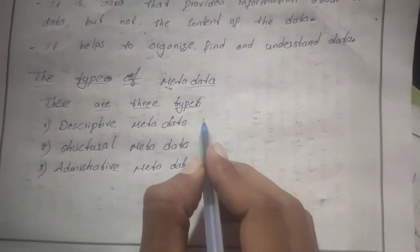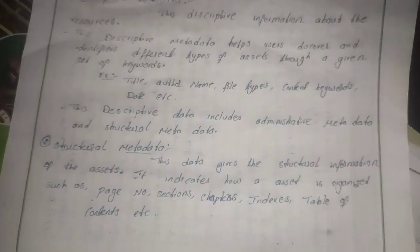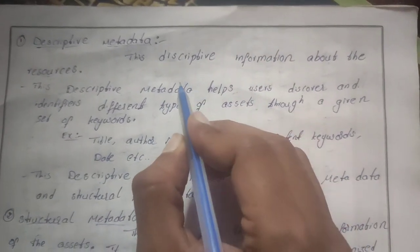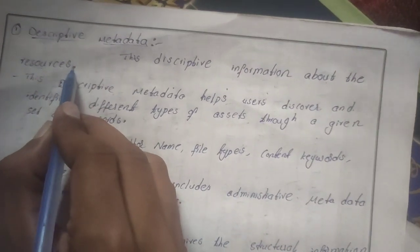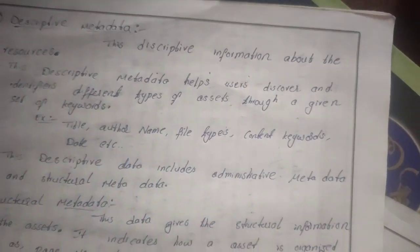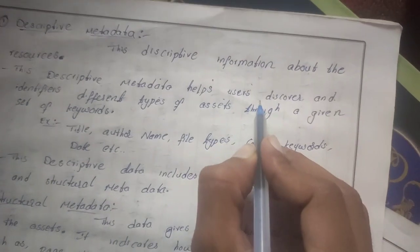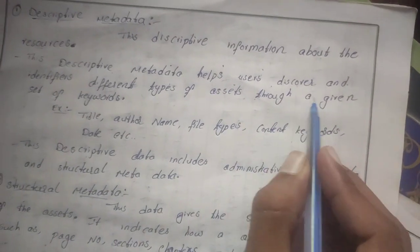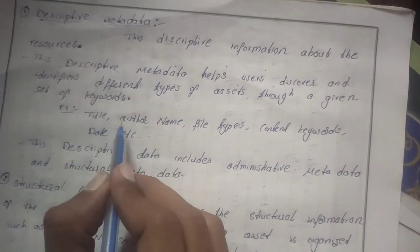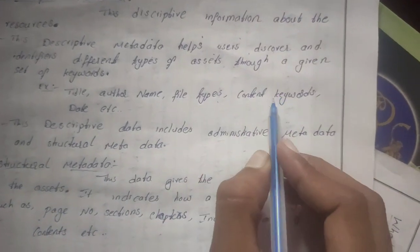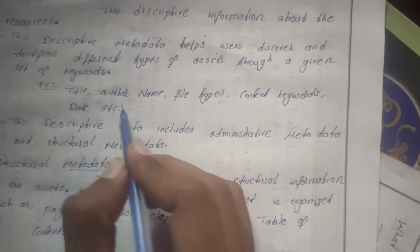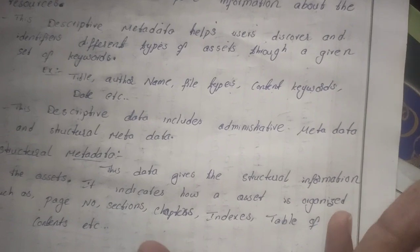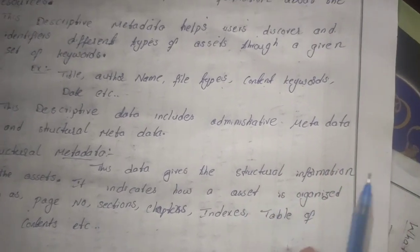First, descriptive metadata — this provides descriptive information about the resources. It helps users discover and identify different types of resources through a given set of keywords. For example, title, author name, file type, content keywords, and data are all part of descriptive metadata.